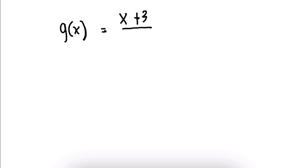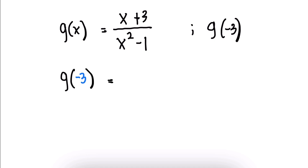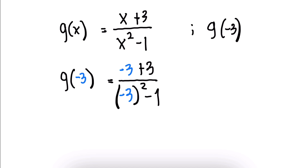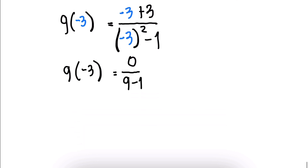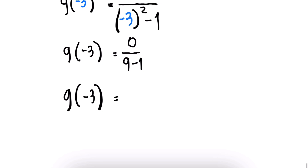Let's have another function g(x) = (x + 3)/(x² − 1). Evaluate g(−3). To evaluate a function, replace every x with −3. So g(−3) = (−3 + 3)/(−3)² − 1. Simplify: g(−3) = 0/(9 − 1). When 0 is divided by any number, the result is 0. Therefore, g(−3) = 0.